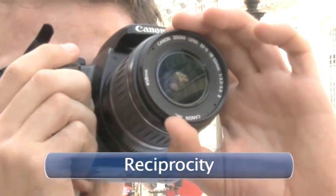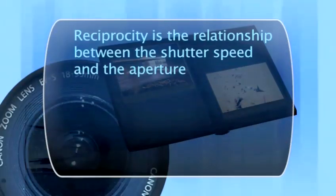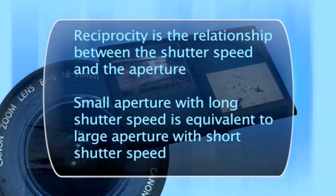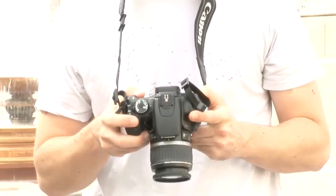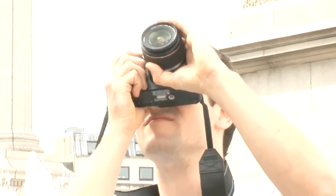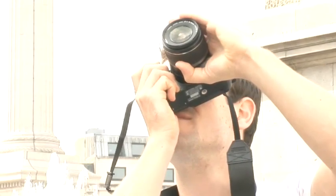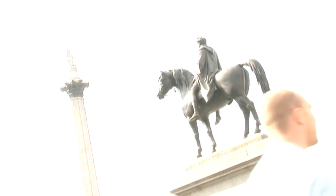Reciprocity: it's at this point that we need to point out reciprocity — the relationship between your shutter speed and the aperture. A small aperture with a long shutter speed is equivalent to a large aperture with a very short shutter speed. Think of it like the amount of time it takes to fill a bucket from a tap. If the tap's only on a little bit, you'll need to leave it running for ages, whereas if it's running full pelt, the bucket will fill up sharpish. Apply that analogy to your camera and it should all make perfect sense.